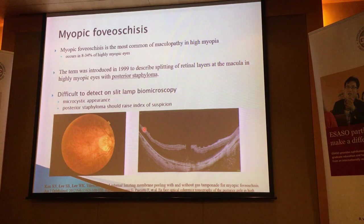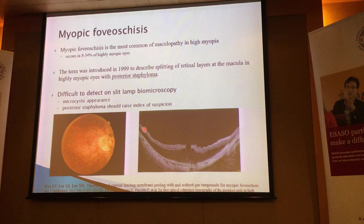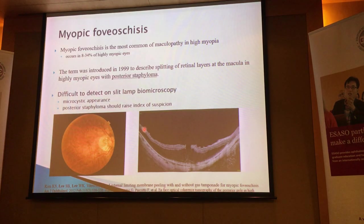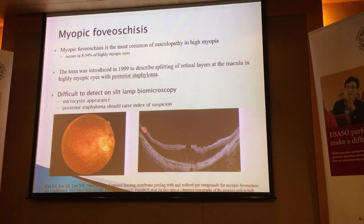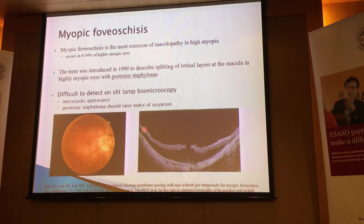What do we know about myopic schisis? We know that it's one of the most common maculopathies that we see in high myopia. Apparently, it occurs in about 24% of high myopic eyes. This term was actually introduced in 1999 to describe the splitting of the retinal layers at the macula in association with the posterior staphyloma. This really astounded me because in 1999, all you had to rely on was fundus examination by microscopy.